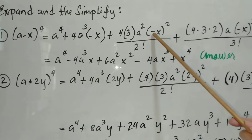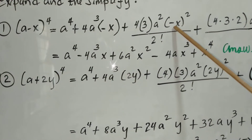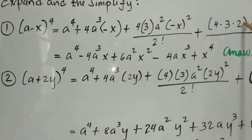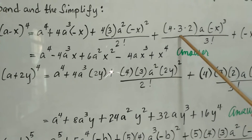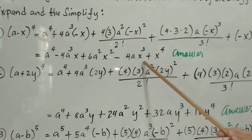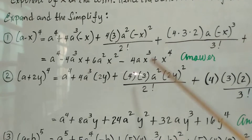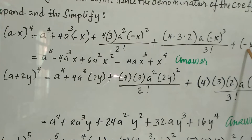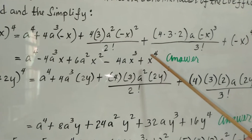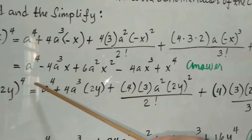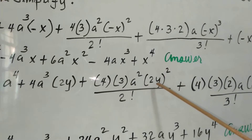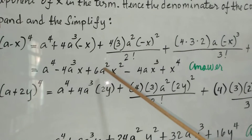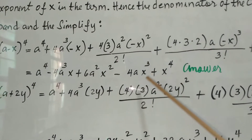Now we simplify. The first term is a to the fourth. Since this is negative, the second term is negative 4a cubed x. The third term: 4 times 3 is 12, divided by 2 is 6, and since this is negative squared that will be positive, giving 6a squared x squared. Then 4 times 3 times 2 divided by 3 factorial gives 4ax cubed, and since negative x to the fourth is positive, the last term is plus x to the fourth. So the final answer is: a to the fourth minus 4a cubed x plus 6a squared x squared minus 4ax cubed plus x to the fourth.